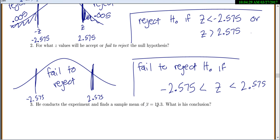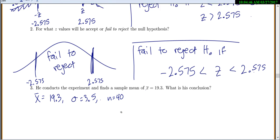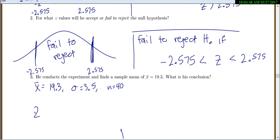Now he conducts the experiment and he finds a sample mean of x-bar equals 19.3. So what is his conclusion? Let's write down everything we know. x-bar is 19.3. Our population standard deviation equals 3.5. And n equals 40. So basically, we just need to find our test statistic, z. We know that our z test statistic is x-bar minus our hypothesized population mean. That's why it has that little 0 to match our null hypothesis over sigma over square root of n.